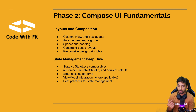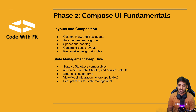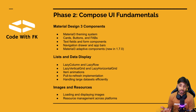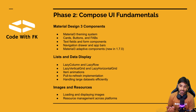Phase two covers Compose UI fundamentals in depth: columns, rows, box layouts, arrangements, alignment, spacers, paddings, constraint layouts, and responsive design. State management is a very important topic — we'll cover stateful and stateless composables, remember, mutableState, derivedStateOf, state hoisting patterns, ViewModels, and best practices. We'll also cover Material Design 3 components, text fields, navigation bars, app bars, and material adaptive components, plus lists and data display using LazyColumn, LazyRow, vertical and horizontal grids, and how to animate them with pull-to-refresh support.